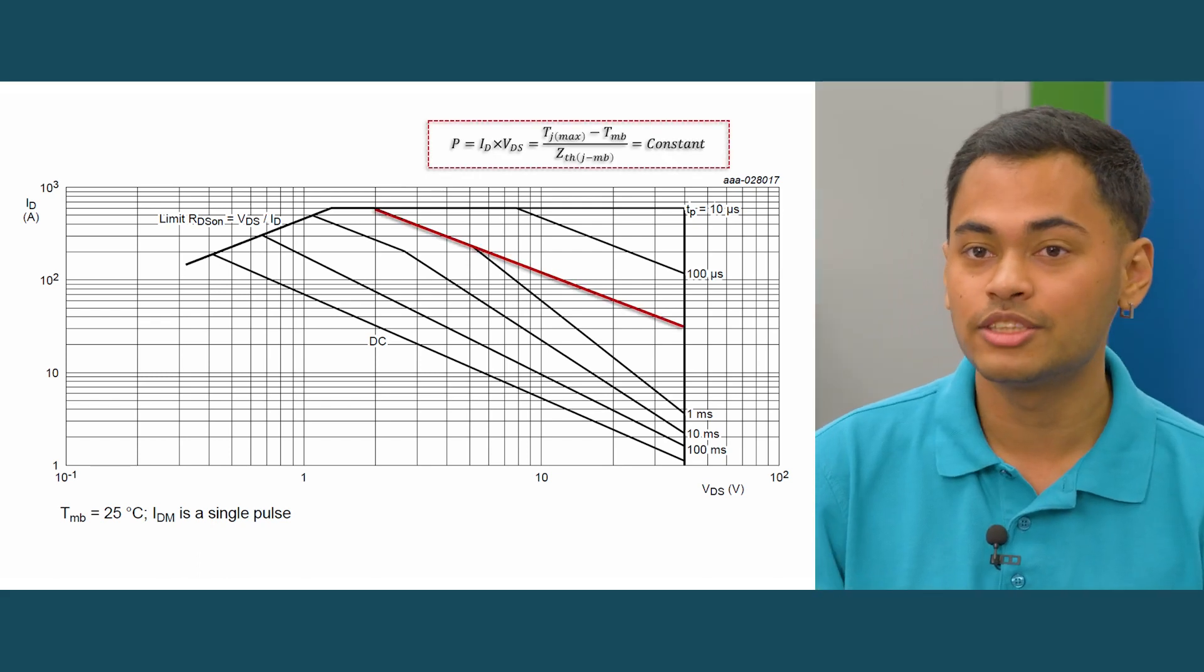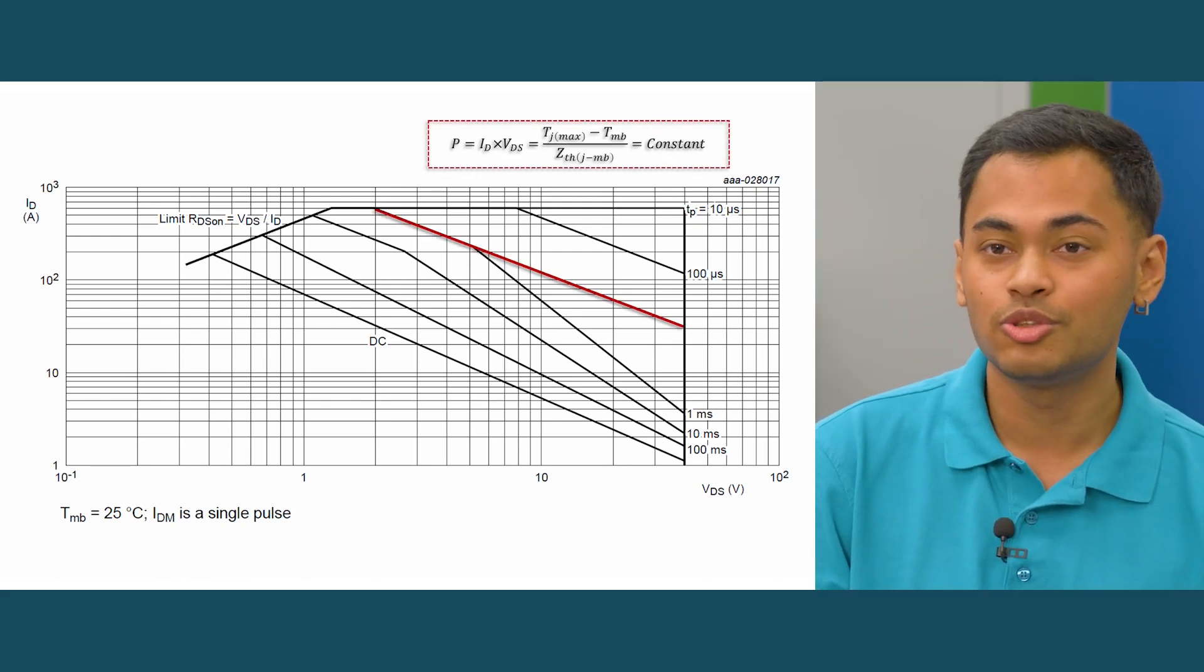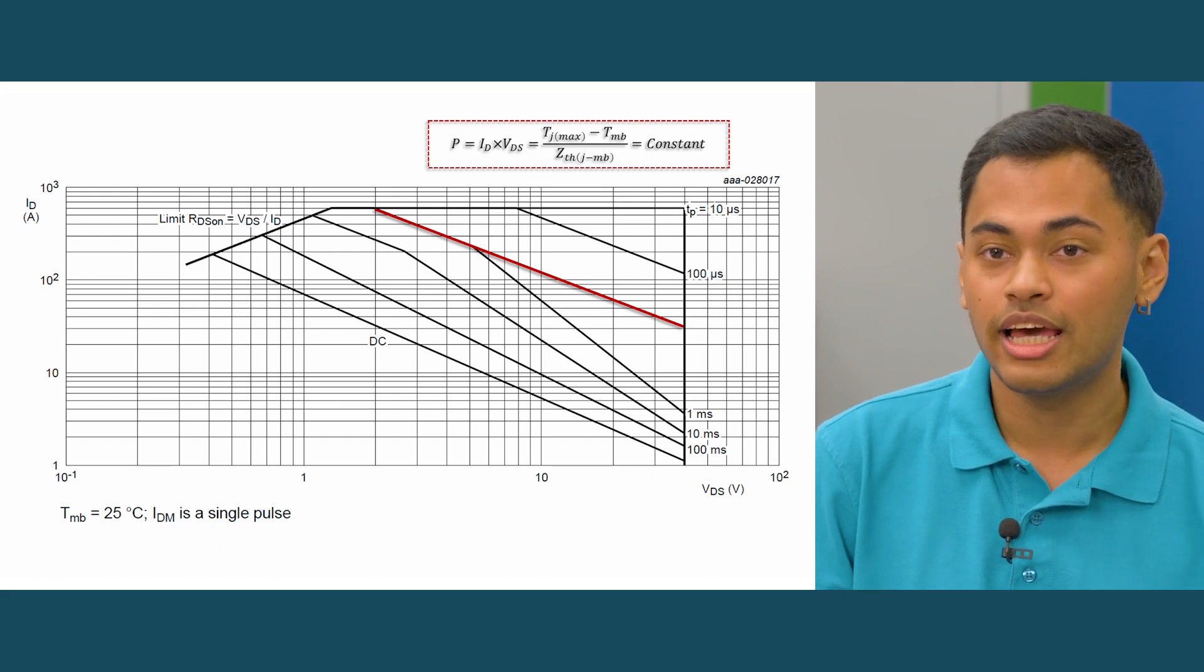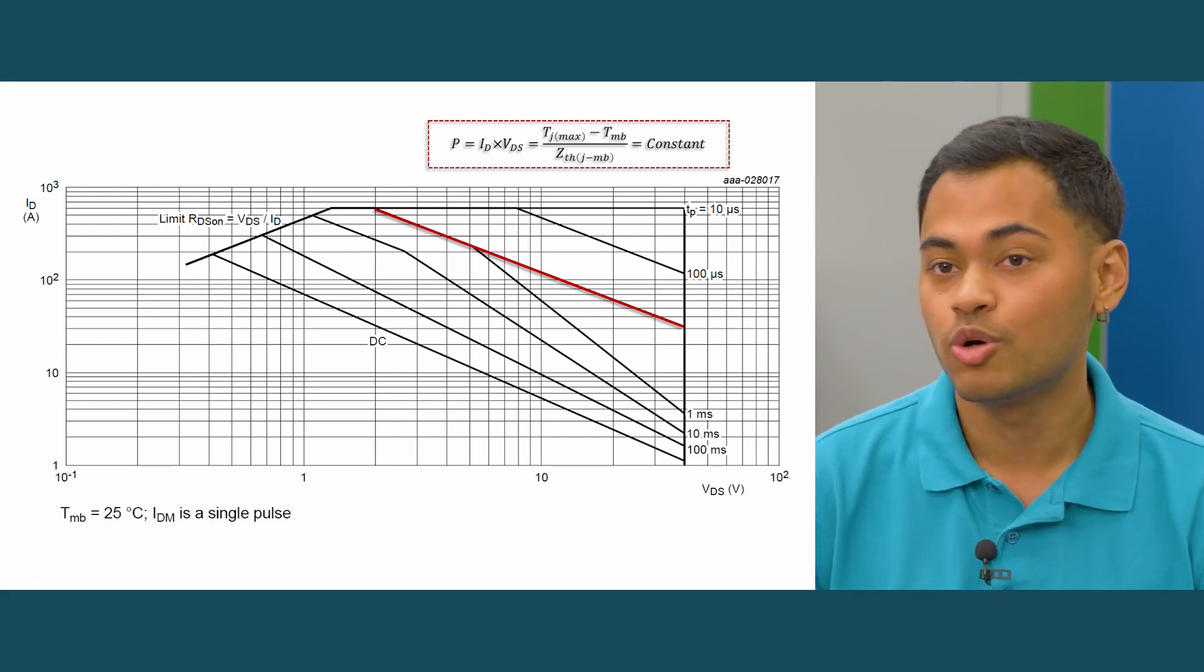If we were to estimate the SOA capability using the theoretical equation shown on the screen, we'd end up with a straight line that's shown in red.